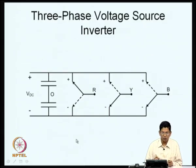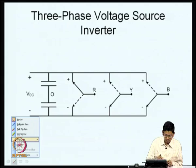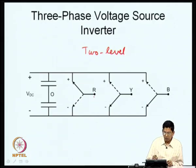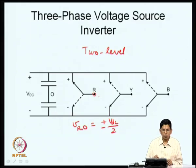Let us look at the conventional two-level voltage source inverter — the standard three-phase two-level VSI. I call this a two-level voltage source inverter because the pole R, which is the midpoint of a leg, measured with respect to the DC bus neutral O, can only take two values: either plus V_DC/2 or minus V_DC/2. Hence we call this a two-level voltage source inverter.